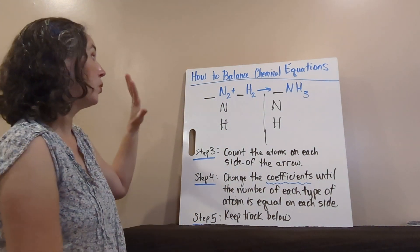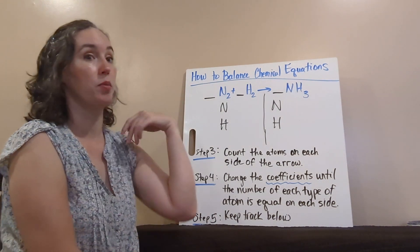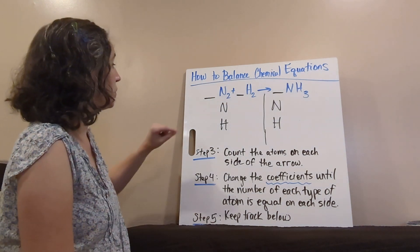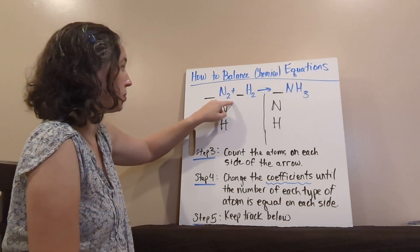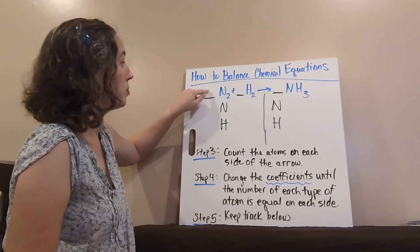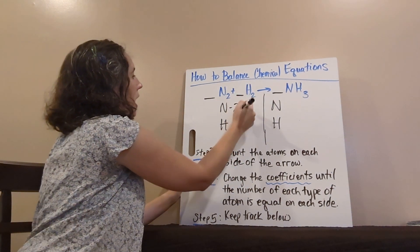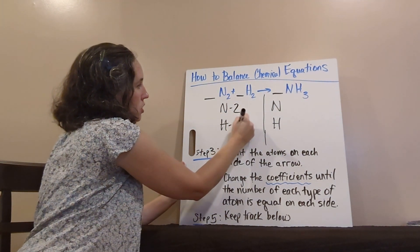What we do is we have lists our elements, and we multiply our subscript times the coefficient. So, for N, our subscript is two. Coefficient, remember if it's blank, that means one. Two times one is two. Hydrogen, same, two times one is two.